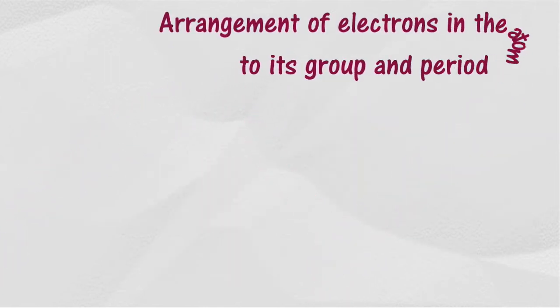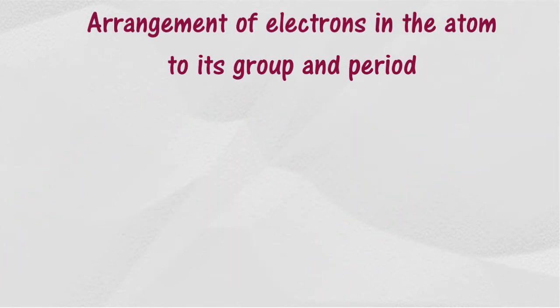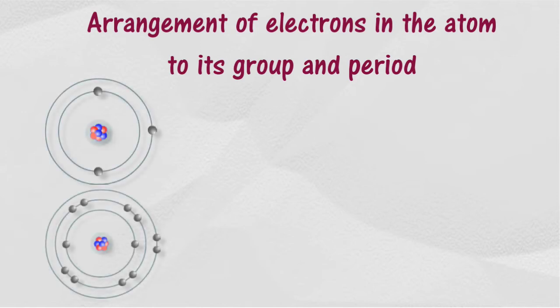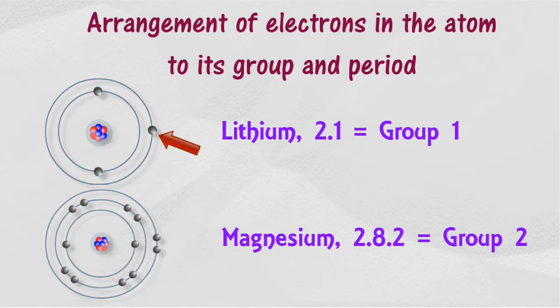The arrangement of electrons in the atom of each element can be used to determine their group and period. Elements with the same number of valence electrons are placed in the same group. The number of valence electrons determines the group to which the element belongs in the periodic table.